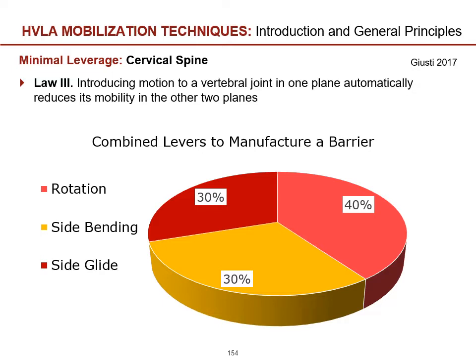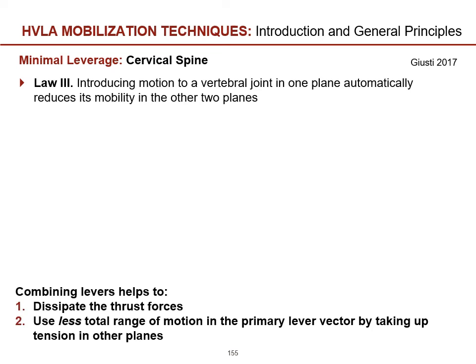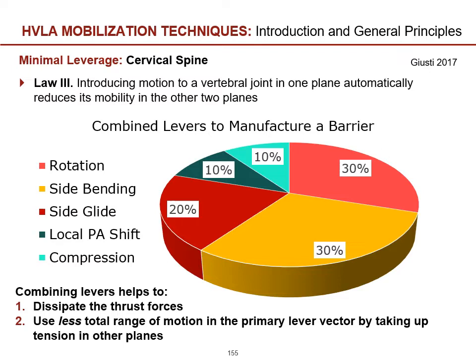Minimal leveraging position goes beyond simply joint apposition. Additional levers can be added depending on proficiency, mobility, and patient comfort. You can introduce a local PA shift — defined as an accessory motion rather than a physiological PA extension — and also add compression of the soft tissue. This gets directly to the definition of minimal leverage positioning: not only apposition of the joints but utilizing the tension of the myofascial and ligamentous structures of the neck. Combining levers helps dissipate thrust forces and uses less total range of motion in the primary lever vector, consistent with Fryette's Third Law.